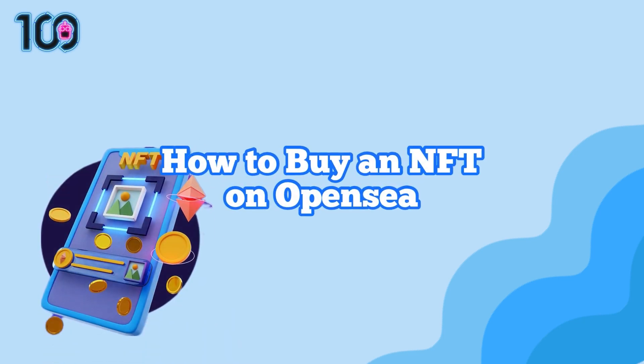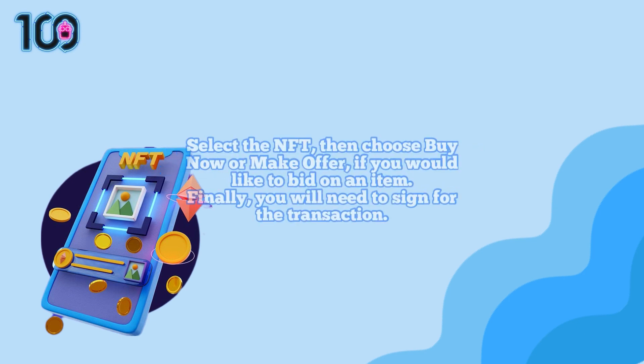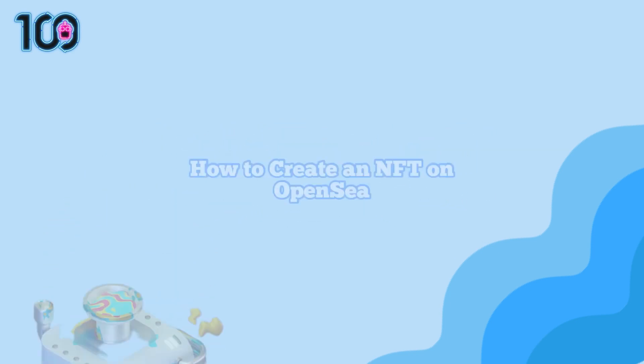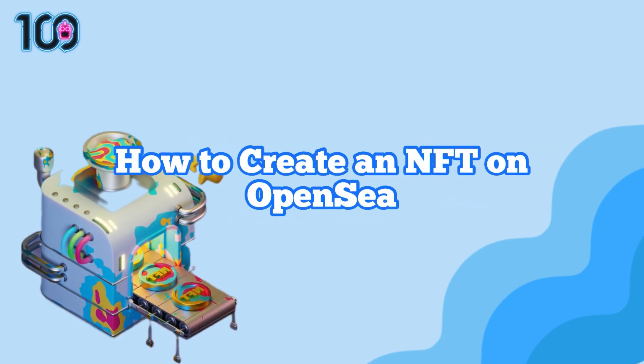How to buy an NFT on OpenSea: select the NFT, then choose buy now, or make offer if you would like to bid on an item. Finally, you will need to sign for the transaction.